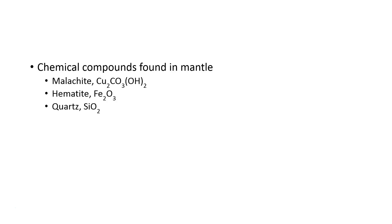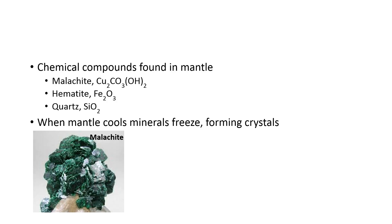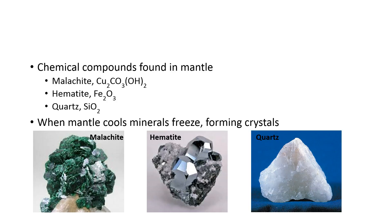I don't expect you to memorize the chemical formula of malachite, for example. When the mantle cools, the minerals will freeze and when they do this, they will form crystals. So that's an example of a crystal of malachite that formed when the mantle cooled and that malachite froze solid. That's an example of hematite and that's an example of quartz. Notice that they're all crystals.